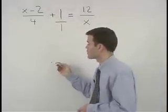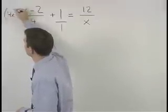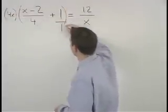So multiply both sides of the equation by 4x to get rid of the fractions.